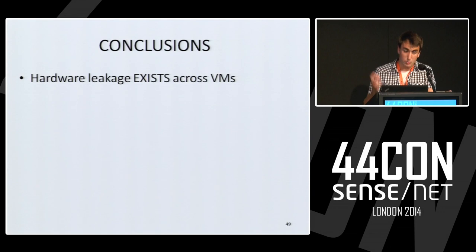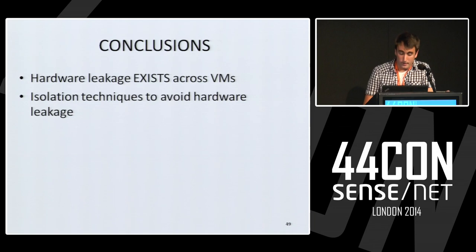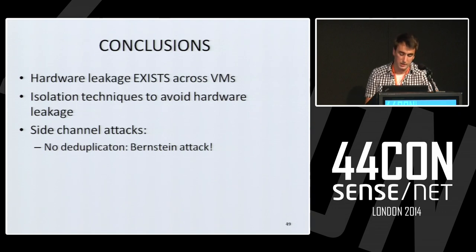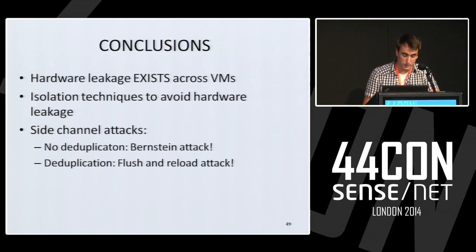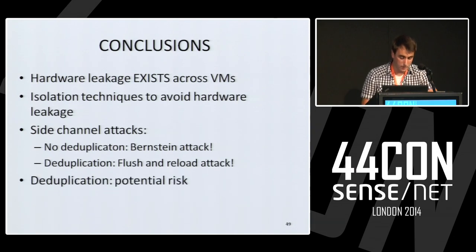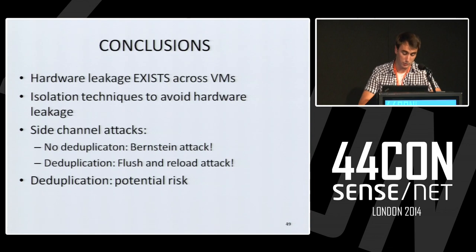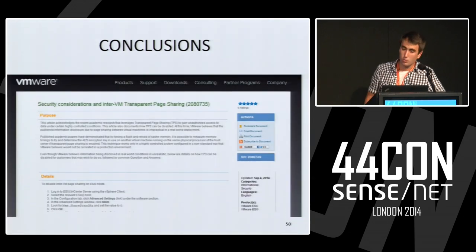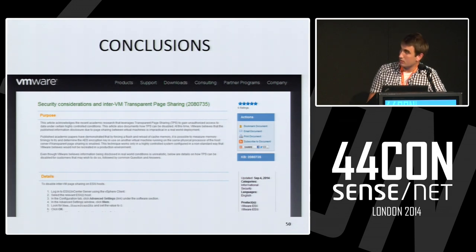Conclusions: hardware leakage across VMs exists and must be addressed through isolation techniques, because it can be exploited painfully. We demonstrated two scenarios: without memory deduplication, Bernstein's attack recovers a reduced key space; with deduplication active, Flush+Reload recovers the full AES key in under a minute. Deduplication is a potential security risk. We communicated this to VMware; they reproduced our attacks in their environment and released a public document explaining configurations to avoid these side-channel attacks in the cloud. Thank you.